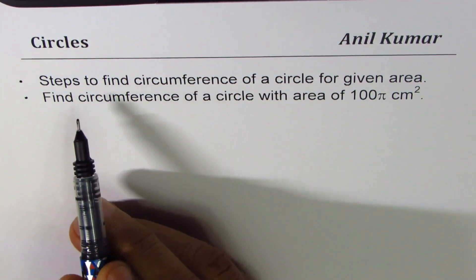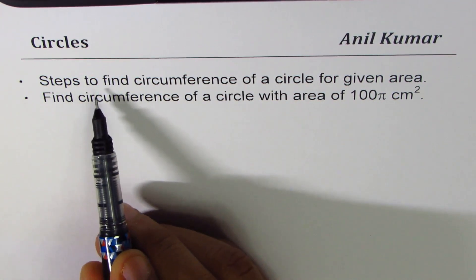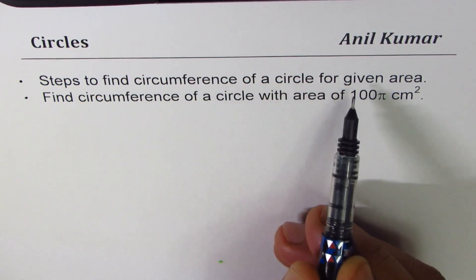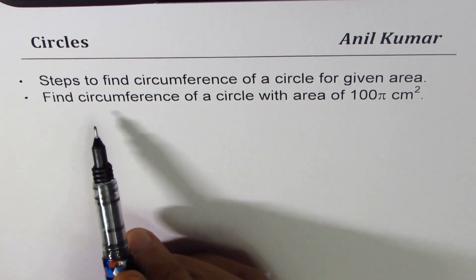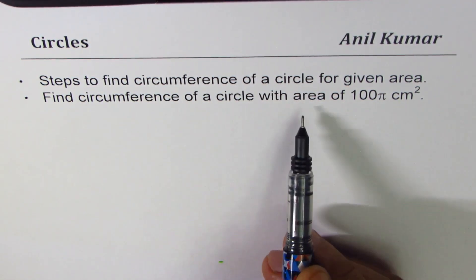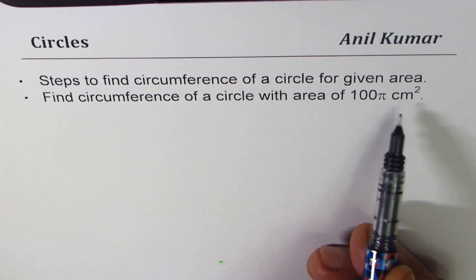The first one is steps to find circumference of a circle for a given area. So that is kind of a general statement which I have made. And the second part here is find circumference of a circle with area of 100π cm².